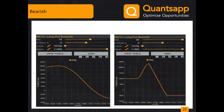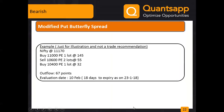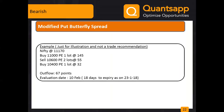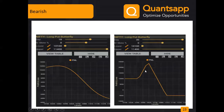Now the put butterfly spread. At Nifty 11,110: buying one 11,000 put, selling two lots of 10,600 put, and buying one 10,400 put. The key idea is we don't expect the market to correct beyond 10,600 — so we sell two options there and buy at 10,400 to limit profit but cap risk. The basic essence of butterfly strategy remains the same whether call or put.